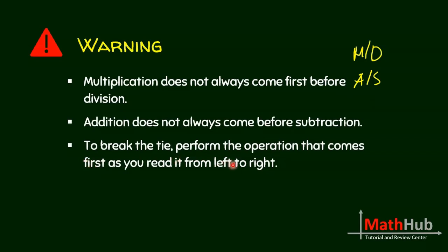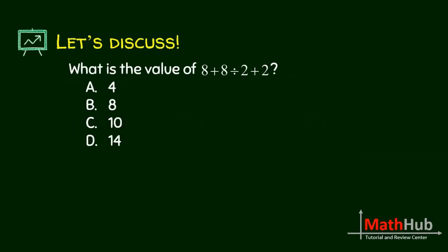For instance I have here 20 divided by 4 times 2. Remember that multiplication and division are tied, so to break the tie whichever comes first. Division first before multiplication, so you have 20 divided by 4, this is 5 times 2, you get 10.